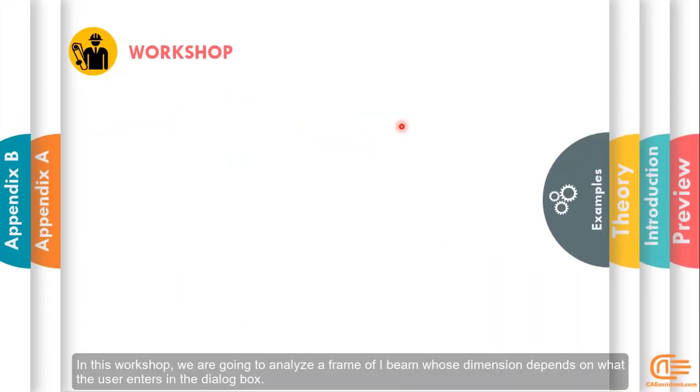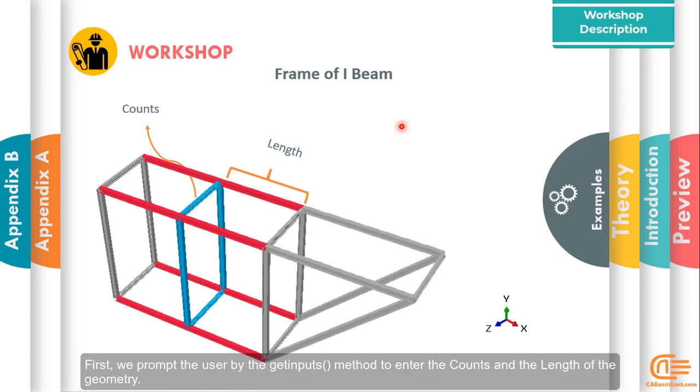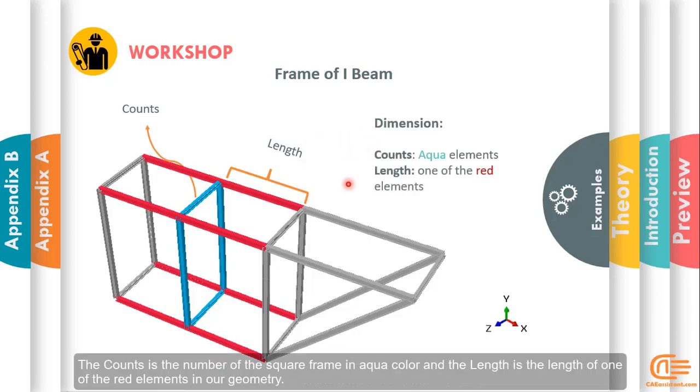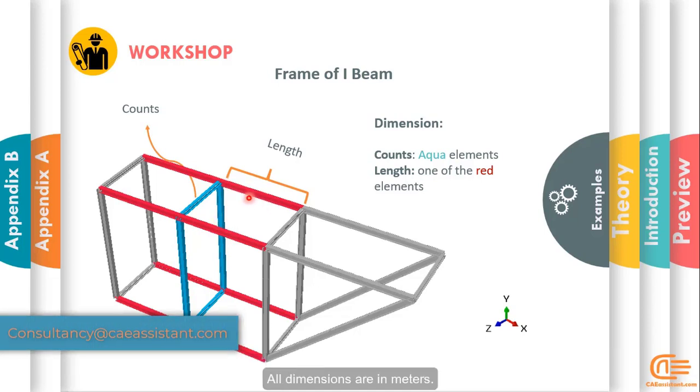Hello and welcome again! In this workshop, we are going to analyze a frame of I-beam whose dimension depends on what the user enters in the dialog box. First, we prompt the user by the getInputs method to enter the counts and the length of the geometry. Note that both of them must be in integer type. The counts is the number of the square frame in aqua color and the length is the length of one of the red elements in our geometry. All dimensions are in meters.